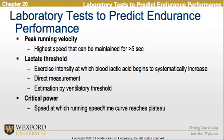Looking at laboratory tests to predict endurance performance, we see peak running velocity — the highest speed that can be maintained for approximately greater than 5 seconds. We also look at lactate threshold — the exercise intensity at which blood lactic acid begins to systematically increase — as a direct measurement and an estimation of the ventilatory threshold. There is also critical power, which is the speed at which the running speed over time curve reaches a plateau.